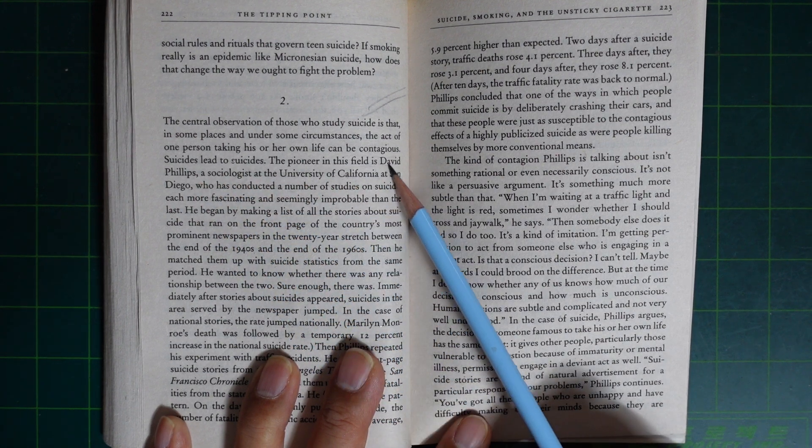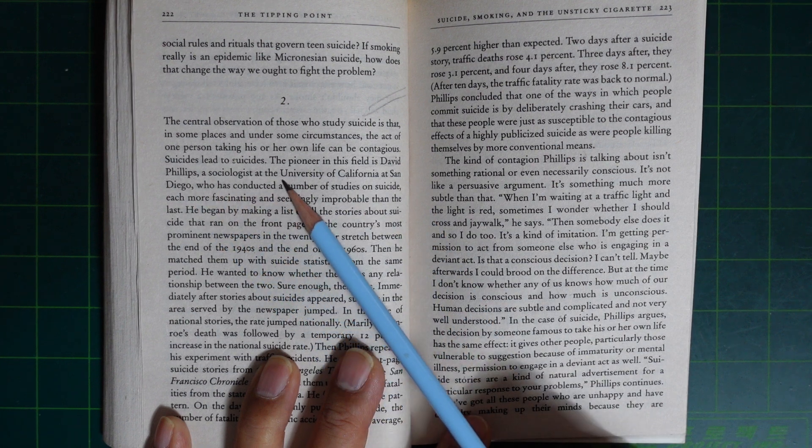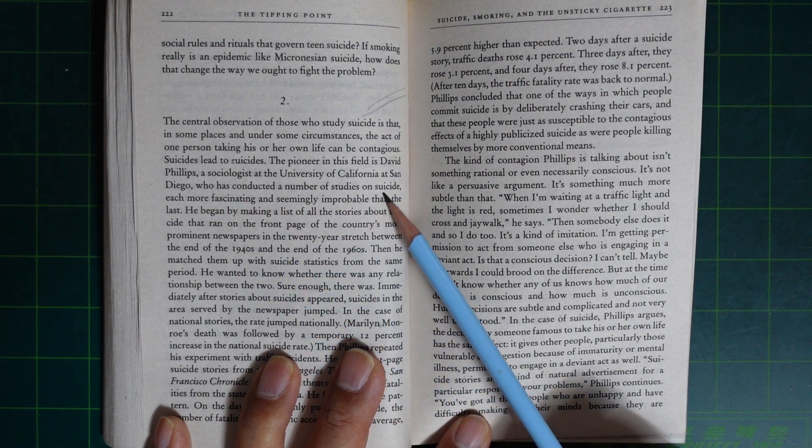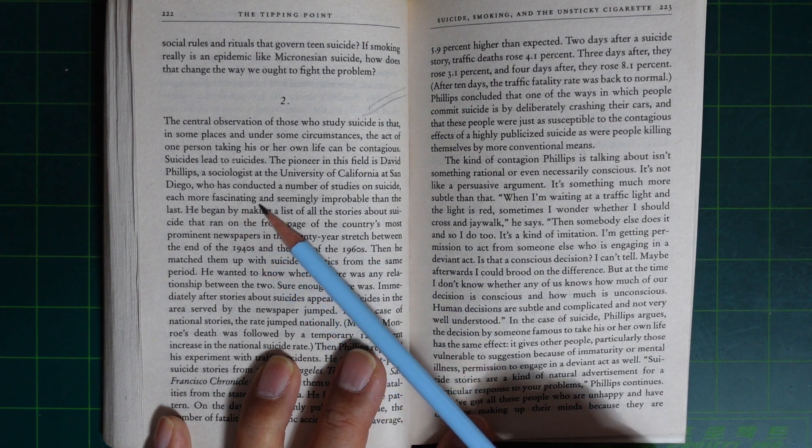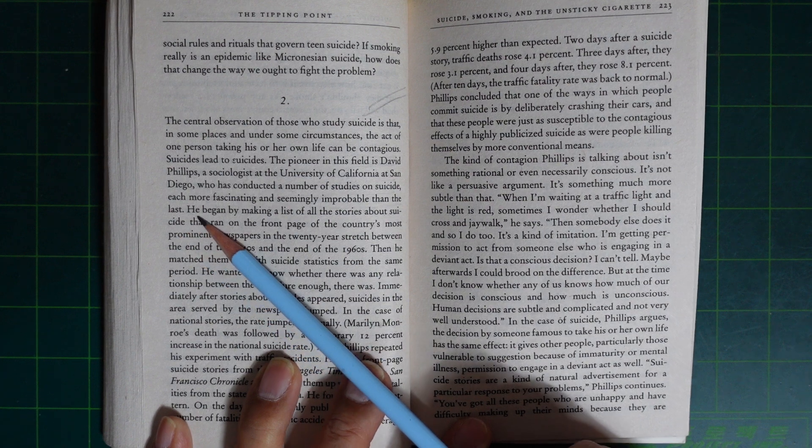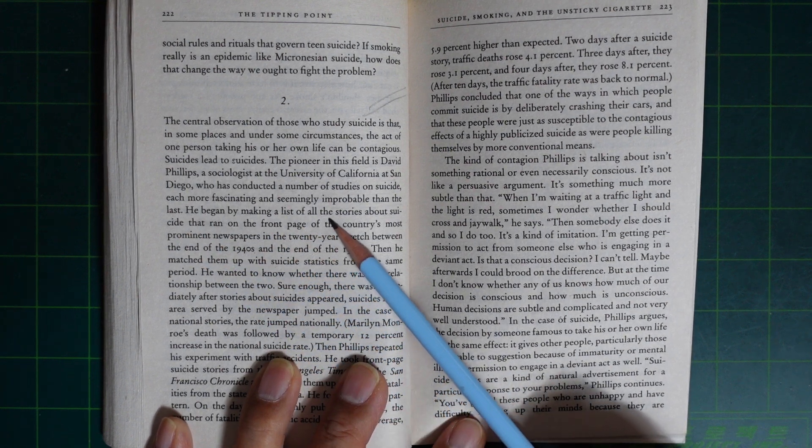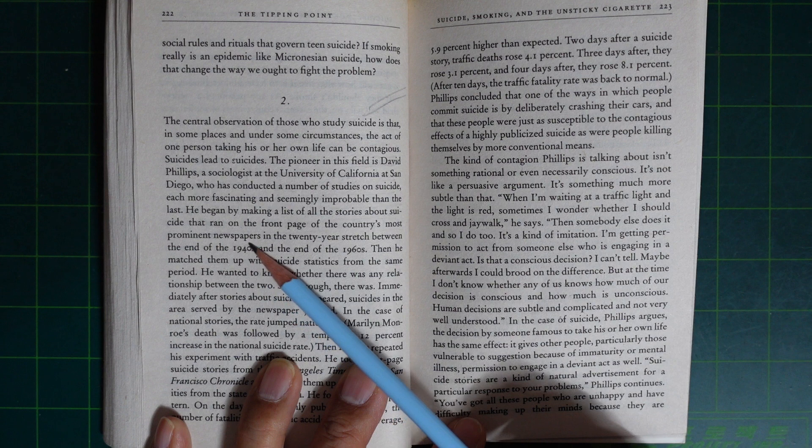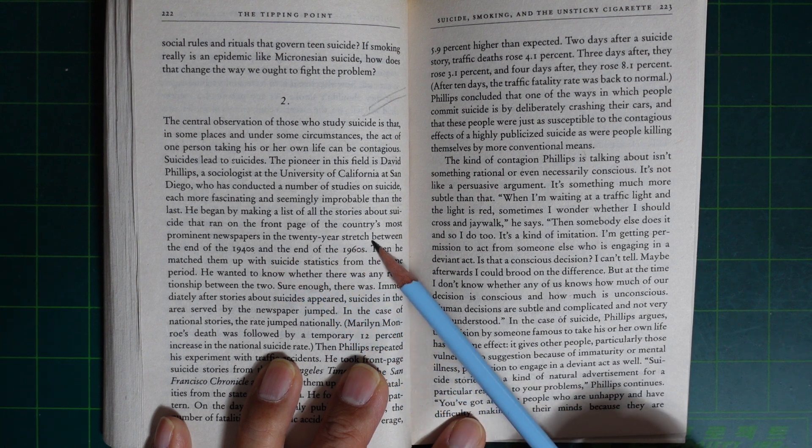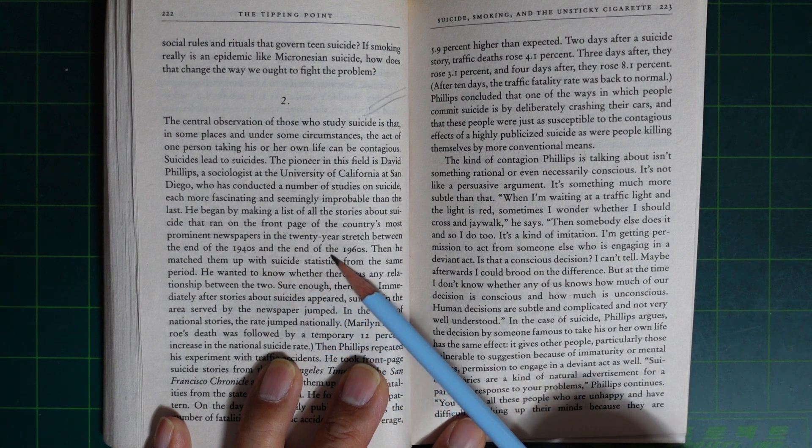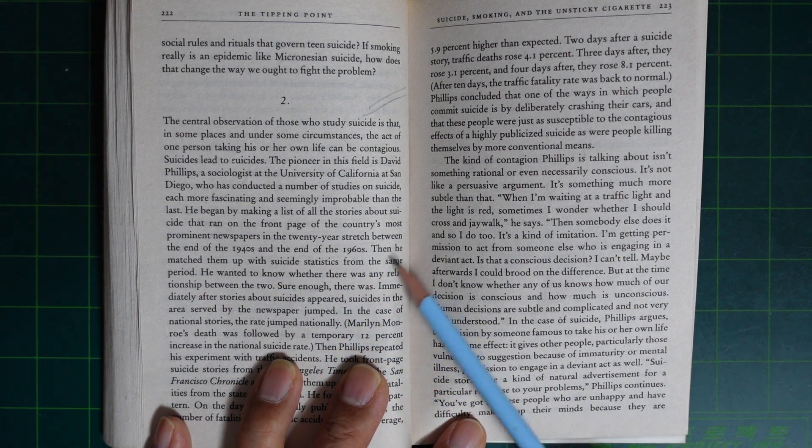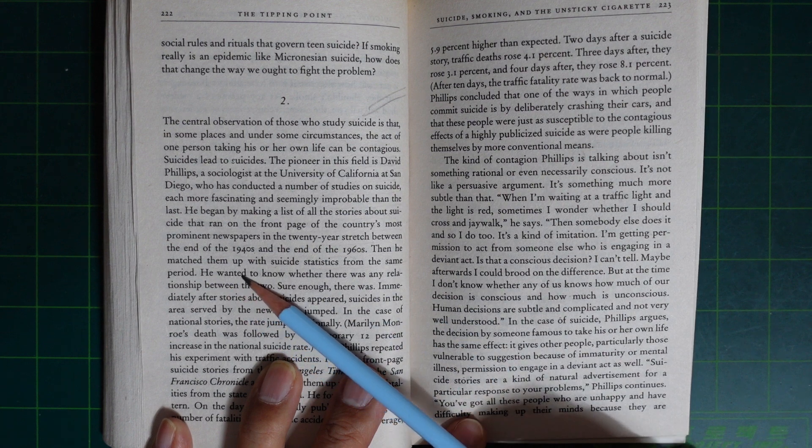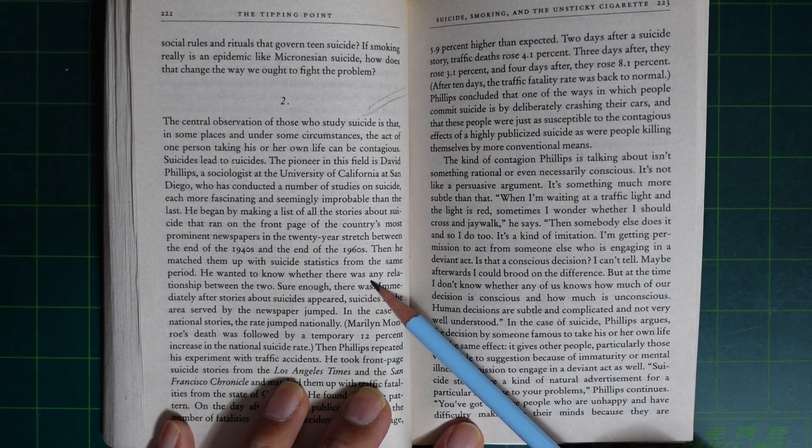The pioneer in this field is David Phillips, the sociologist at the University of California at San Diego who has conducted a number of studies on suicide, each more fascinating and seemingly improbable than the last. He began by making a list of all the stories about suicide that land on the front page of the country's most prominent newspapers in the 20 year stretch between the end of 1940s and the end of the 1960s. Then he matched them up with suicide statistics from the same period. He wanted to know whether there was any relationship between the two.